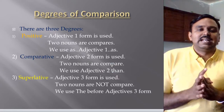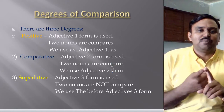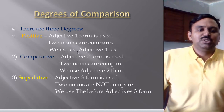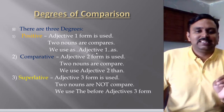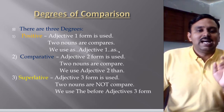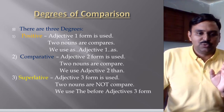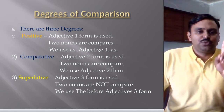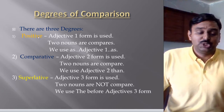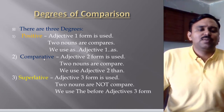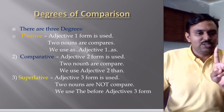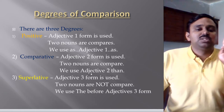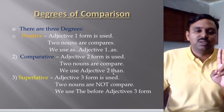We have already discussed that in the positive degree, the first form of the adjective is used, two nouns are compared, and we use 'as adjective/adverb first form as.' In the comparative degree, the adjective second form is used, two nouns are compared, and we use 'adjective second form' followed by 'than.'